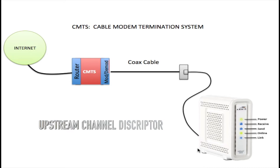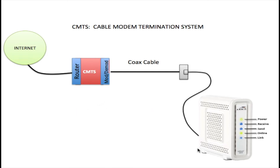UCD stands for Upstream Channel Descriptor. This information is needed for the modem to know what upstream frequencies to use to contact the CMTS. Once this information is found, the modem uses it to try to contact the CMTS using the lowest power settings, since it's unaware of how far away the CMTS is. If the modem gets no response, it raises the power by 3dB and tries again, repeating this process until the CMTS is reached.